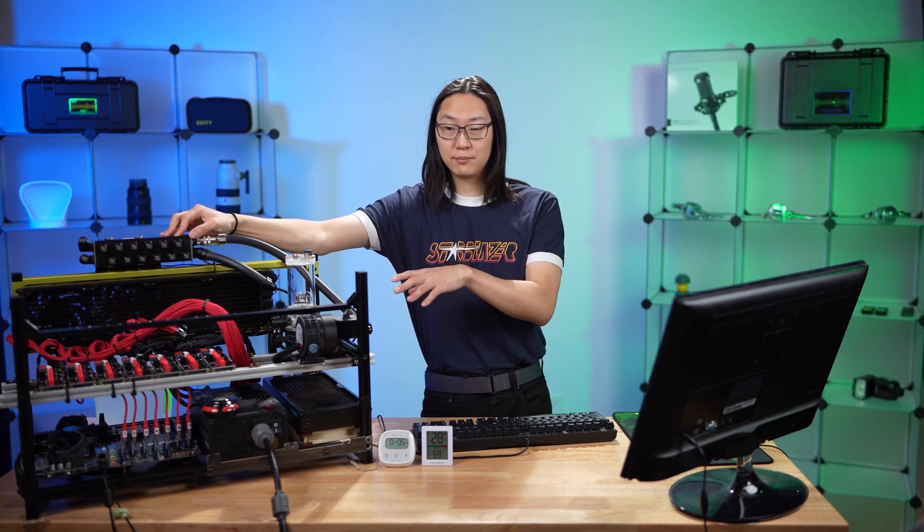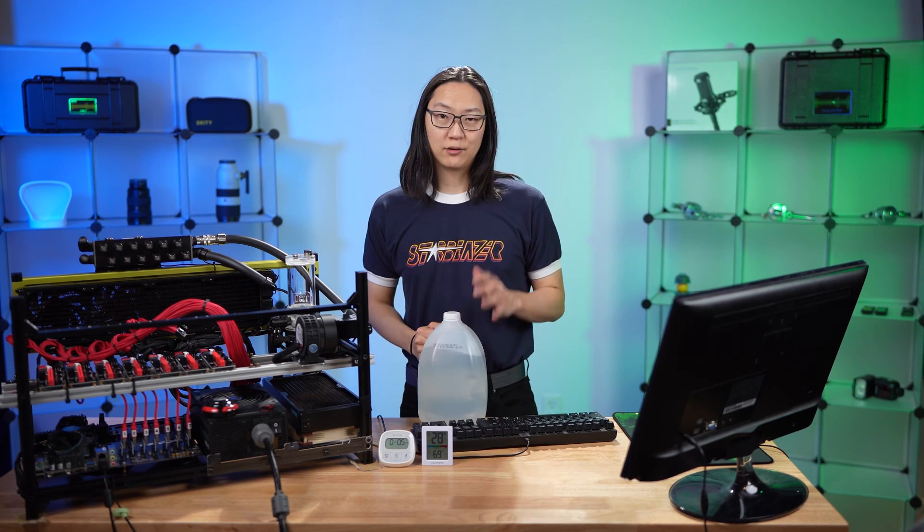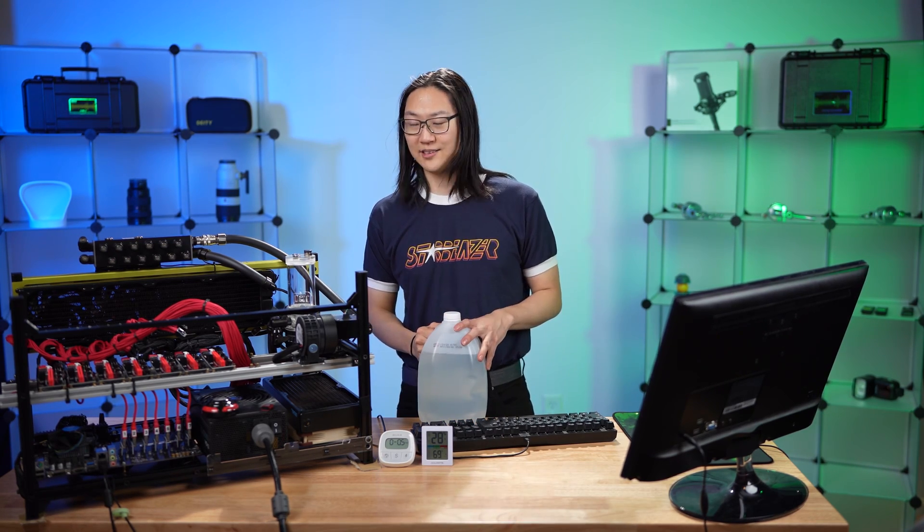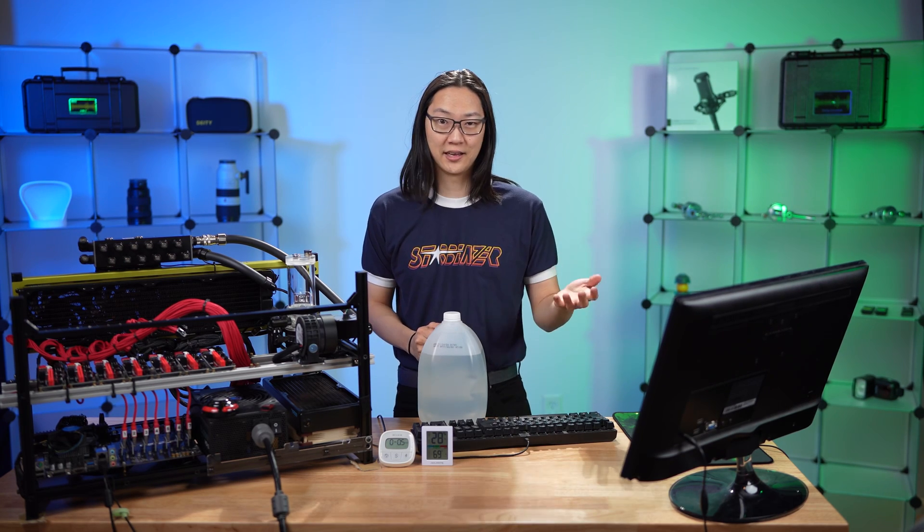So what we're going to do is we're going to prime the loop. I'm just going to be using distilled water that I just got from the grocery store. I don't recommend using this long term because it doesn't have any anti-corrosive properties. It is distilled, so it technically has nothing in it.